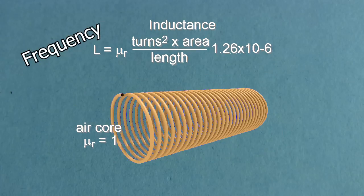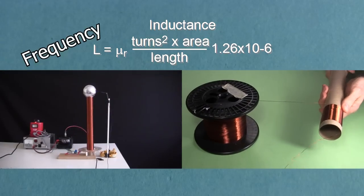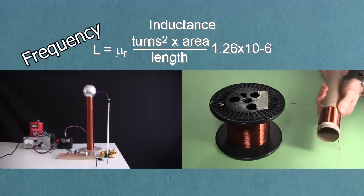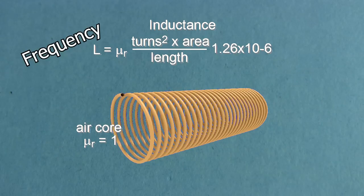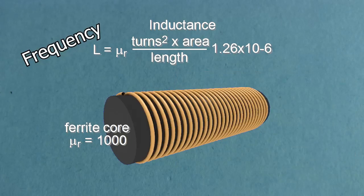Also, the frequency you're using will affect your choice of core. High frequencies, like the hundreds of kilohertz resonant frequencies of Tesla coils, aren't very efficient with high permeabilities. That's one reason Tesla coils use air core coils. But for a lower frequency, simple step up or step down transformer, you want a solid core.